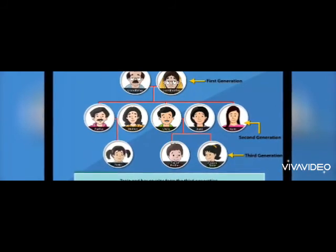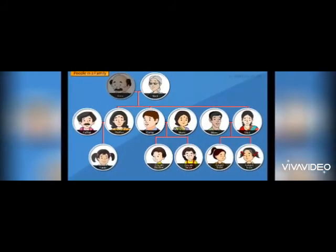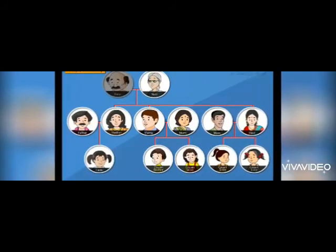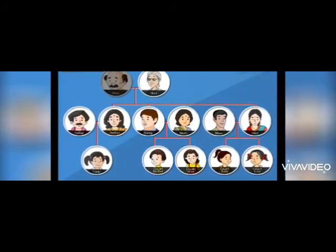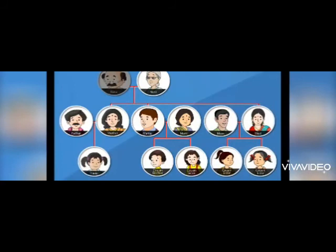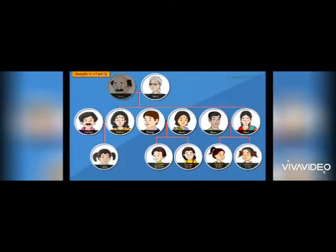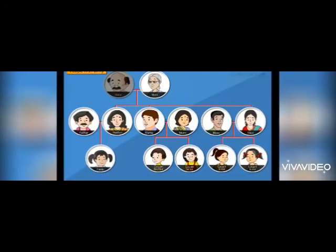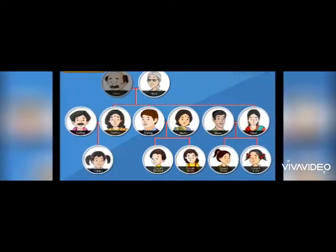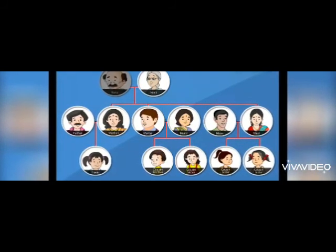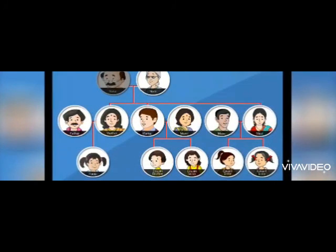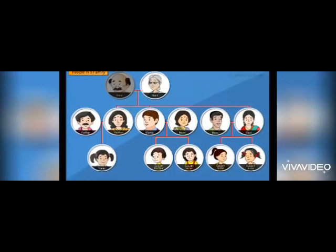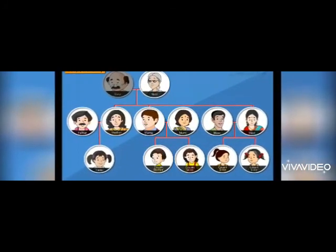Now see in this — in the first generation, Nana and Nani are there. In the second generation, Tania's father, mother, mama, mami, mausi, and mausa are there. And in the third generation, Tania and her cousin brothers and sisters are there.